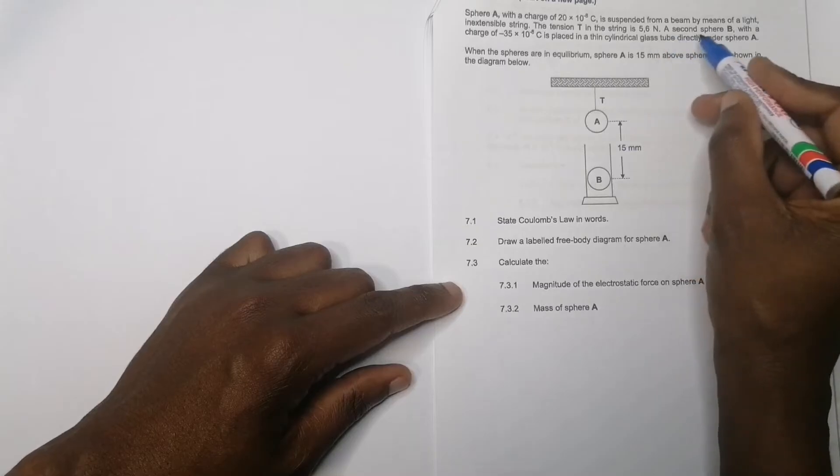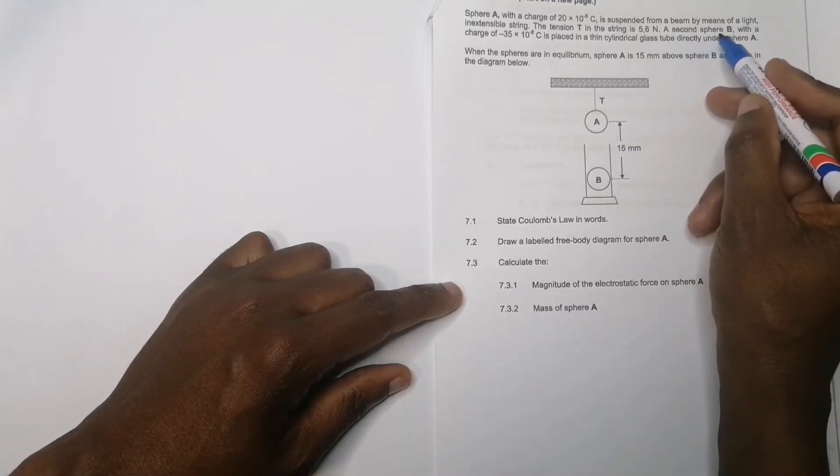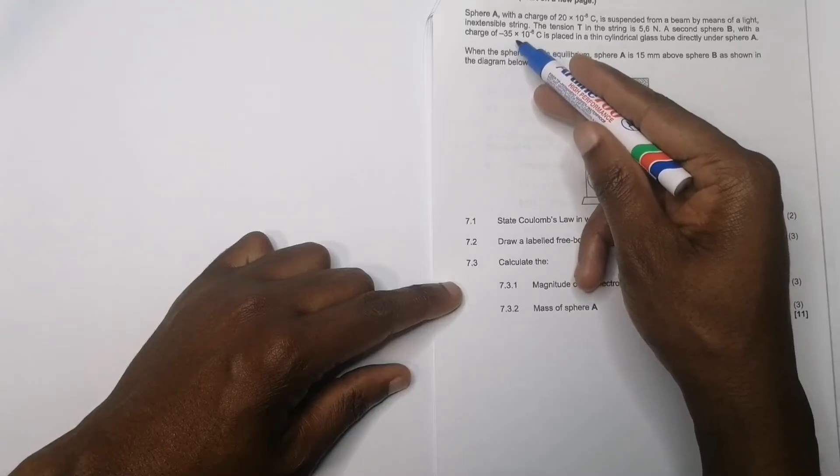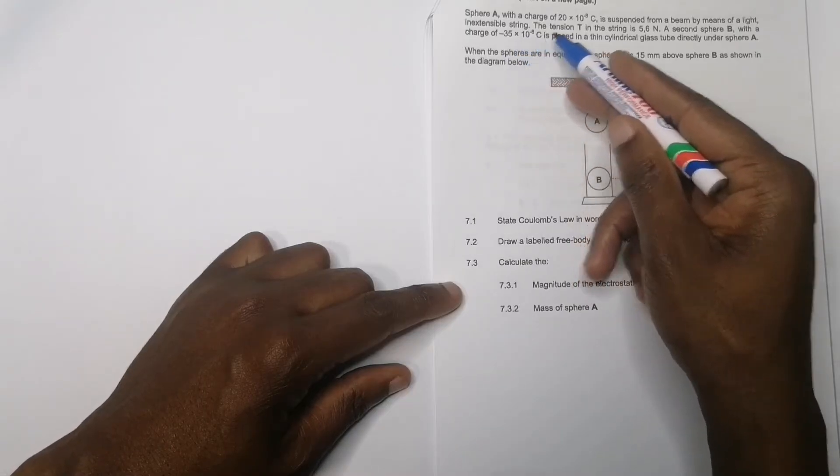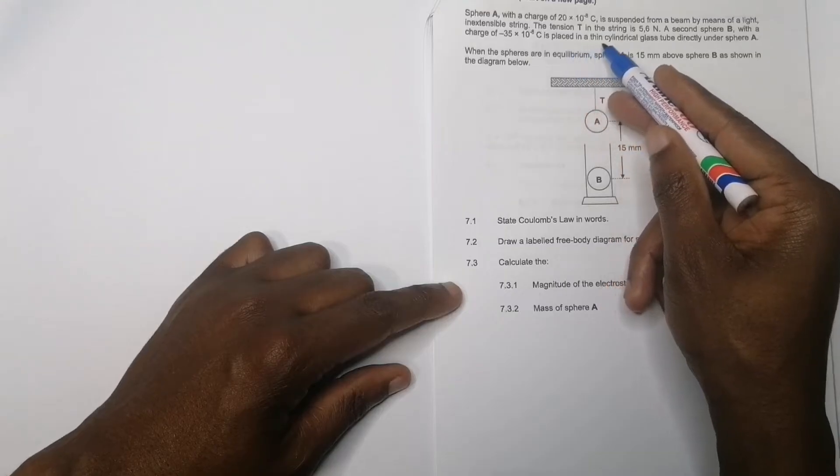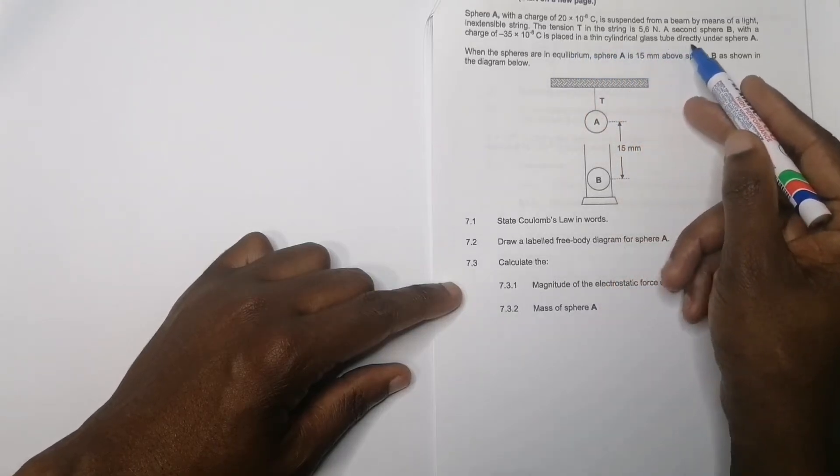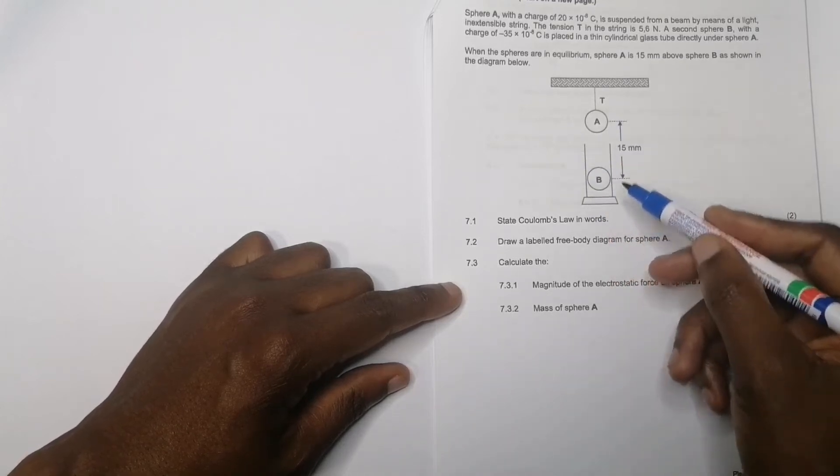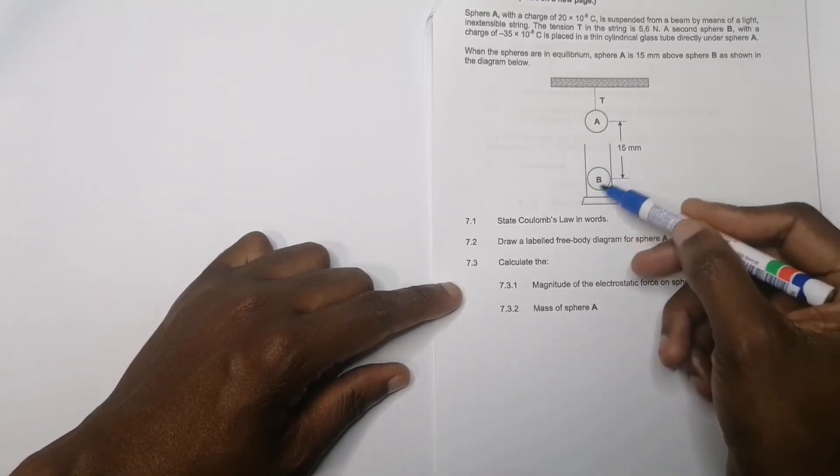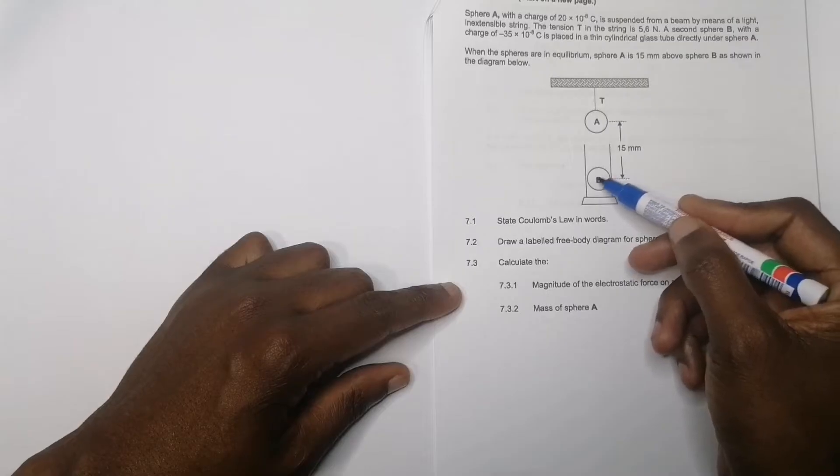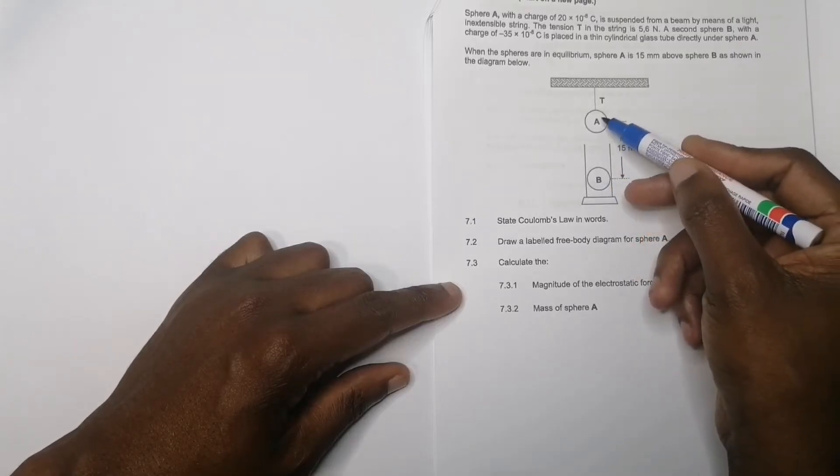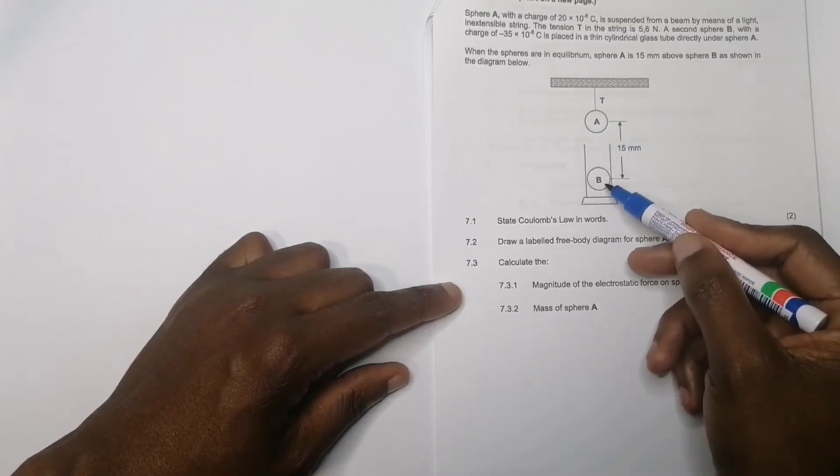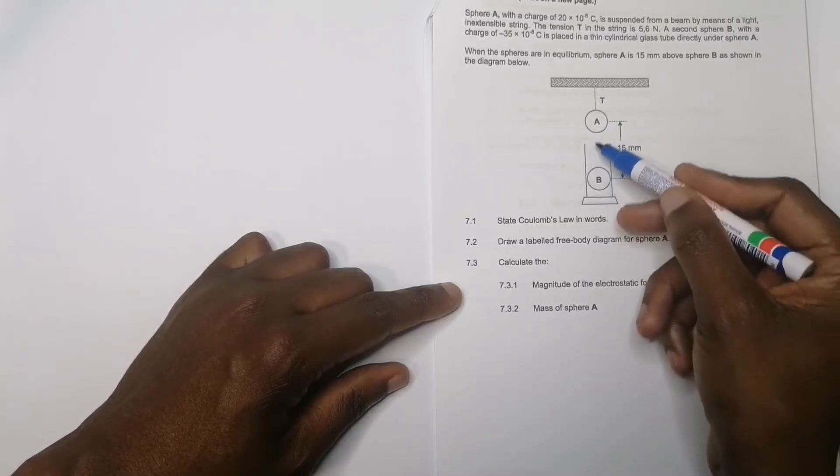A second sphere B with a charge of minus 35 times 10 to the power minus 8 coulombs is placed on a thin cylindrical glass tube directly under A. So this one is placed on a tube so it doesn't move. Since this is positively charged and that's negatively charged, they're going to attract each other. But A is not able to move, so it's in equilibrium.